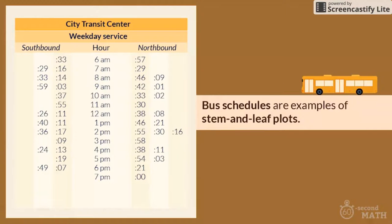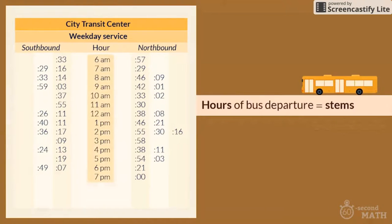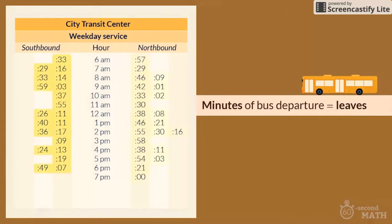Bus schedules are examples of stem and leaf plots. Let's see how. In this bus schedule, the different hours of bus departure represent the stems. The minutes of bus departure, shown separately for southbound and northbound destinations, make up the leaves.